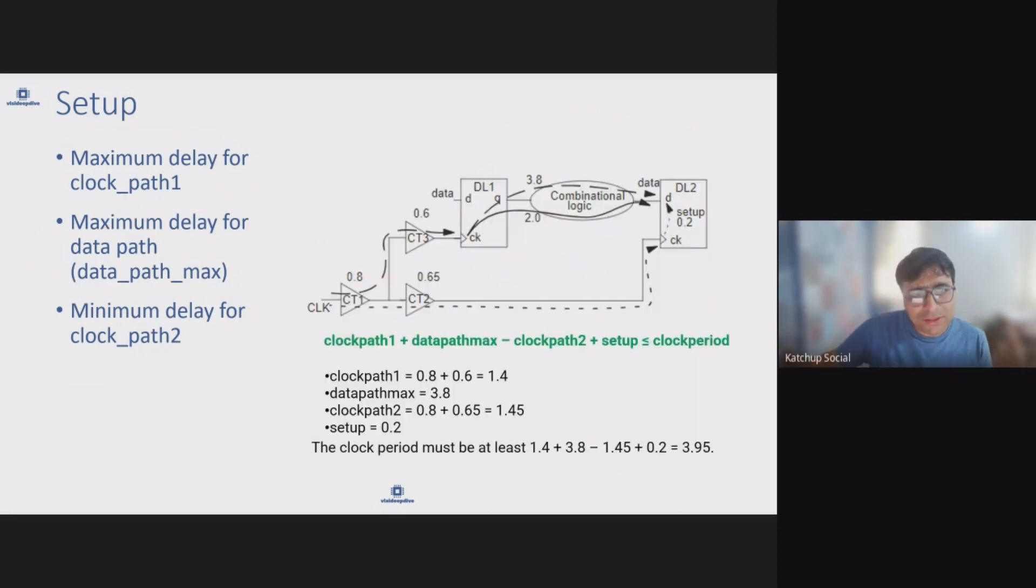Let's understand this using an example. In this example we have this clock delay 0.6 and 0.8, 0.6, 0.65 here. This path has multiple paths - one delay is 3.8, one delay is 2.0. Now what a stable equation would be: clock path one, that is delay of clock path one, maximum delay on the data path, minus clock path delay on the receive side, plus setup - it should be less than clock period.